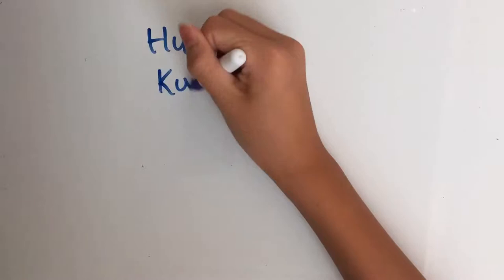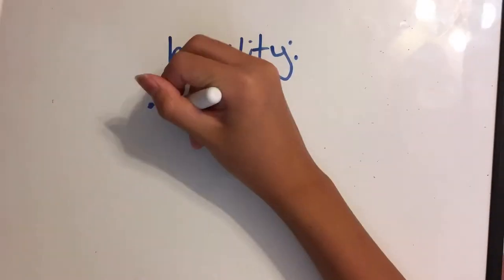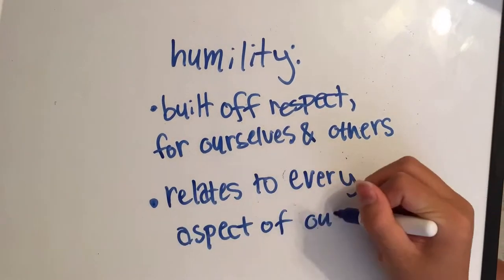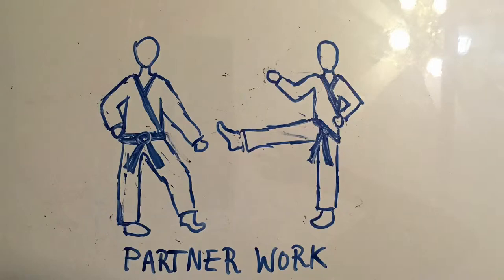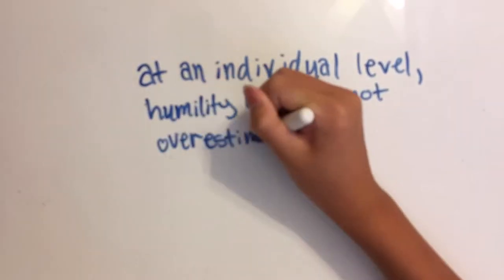Number five, humility, Hyum-shin. The foundation of humility is respect, for ourselves and for others. It relates to every aspect of our training, our technique, and partner work. At an individual level, humility helps us not to overestimate our abilities.